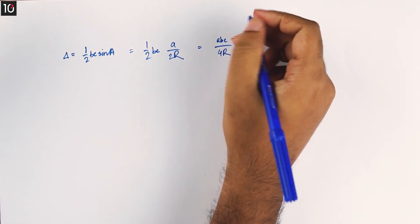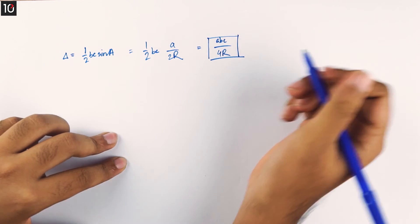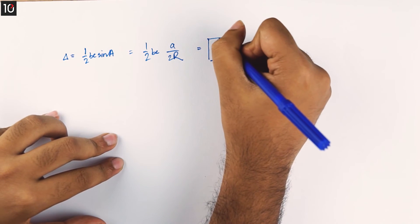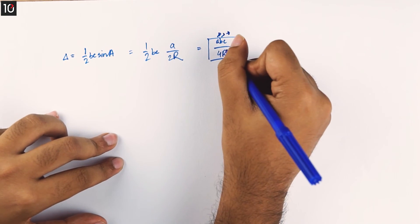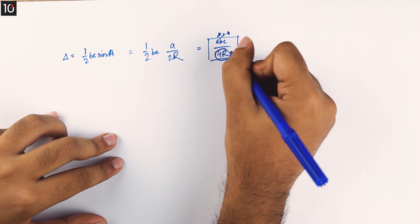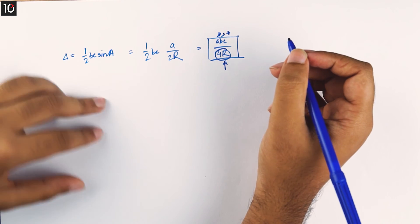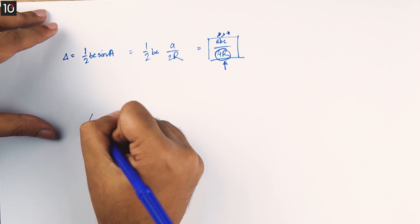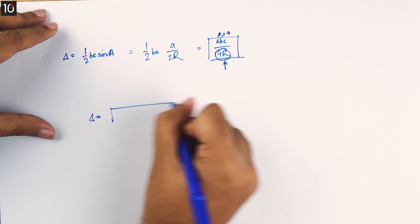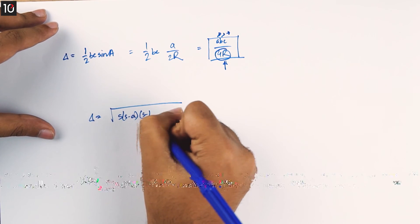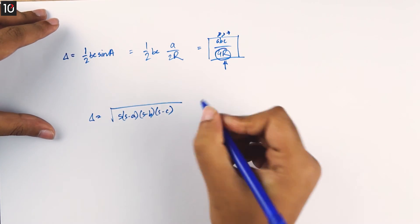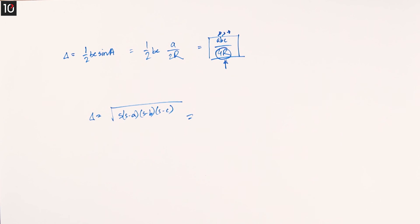We have ABC divided by 4R. What do we learn? S into S minus A into S minus B into S minus C. ABC divided by 4R.